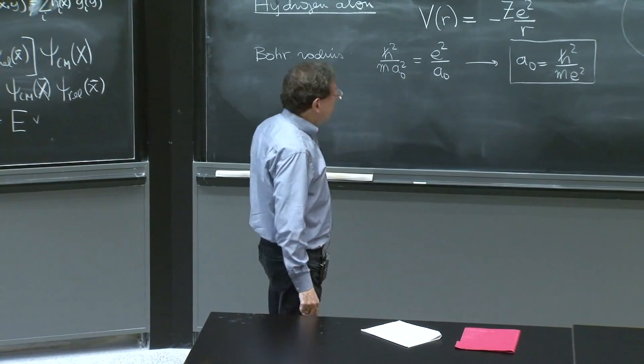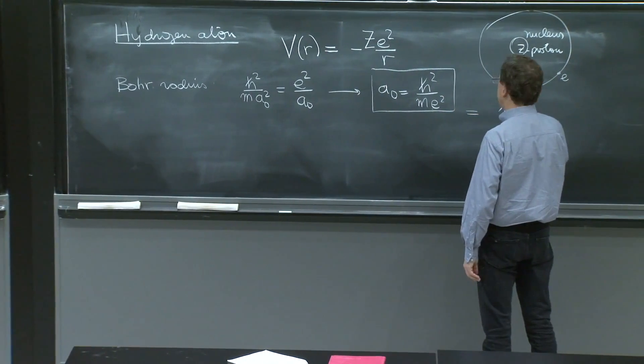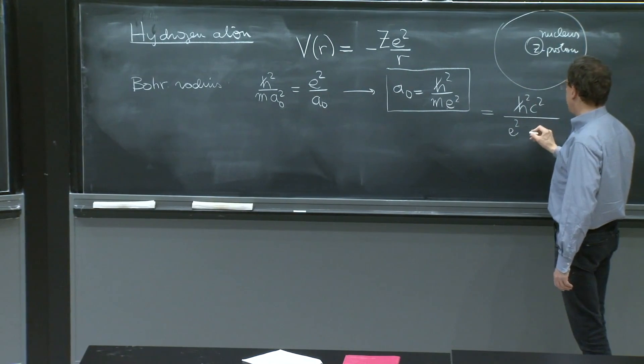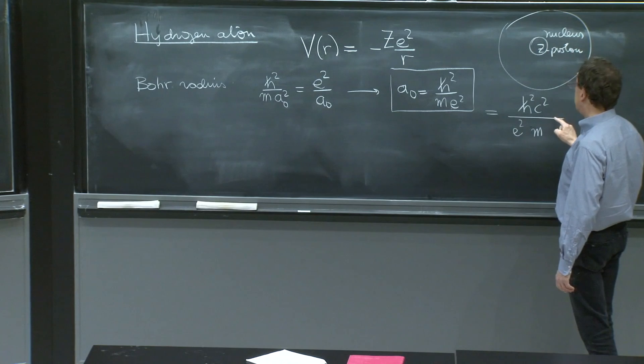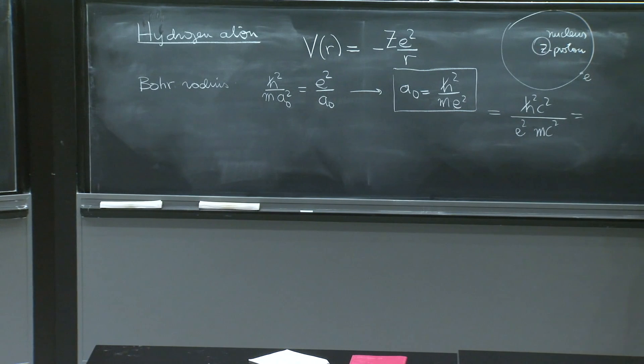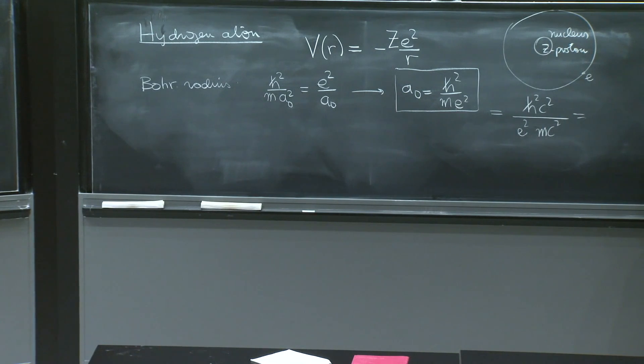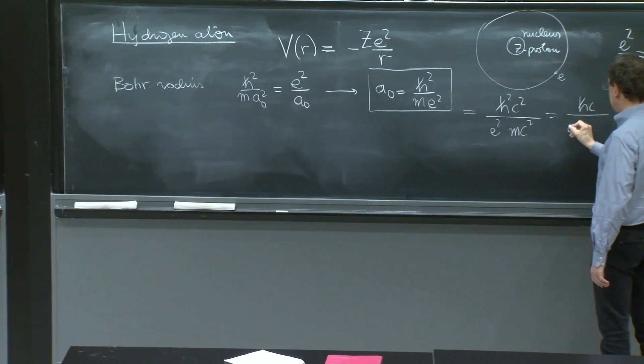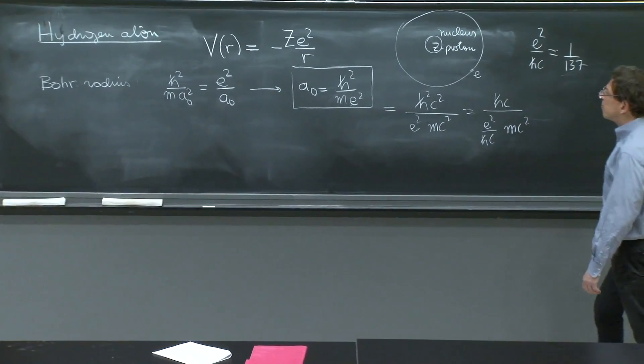So at this moment, we can calculate what this is, at least estimate it. And for that, we multiply by hc over e squared over mc squared. And then we recall that e squared over hc is about 1 over 137. So we'll write this as hc over e squared over hc times mc squared.